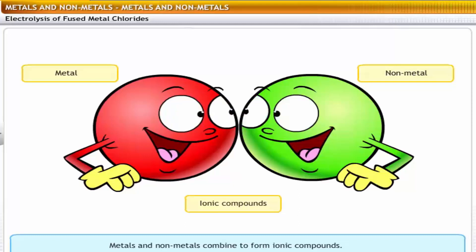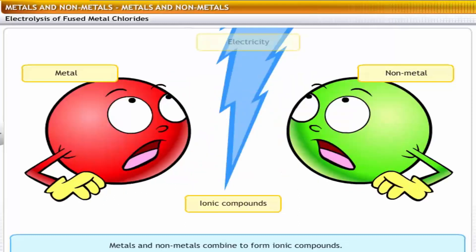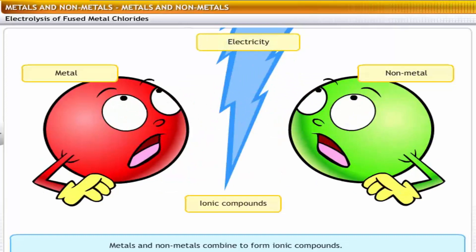You can overcome this force of attraction, or decompose this compound, by passing electricity through it. The process of decomposition of a substance by passing electricity through it is called electrolysis.